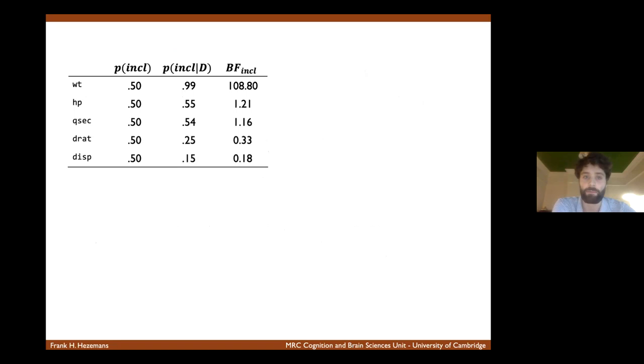So we see here that again the car's weight, the data is 109 times more likely among models that include the car's weight compared to those that exclude it. The other results are a bit equivocal, but it's also nice to see that this predictor, DISP, which is engine displacement, there's quite strong evidence in favor of excluding it because the data was much less likely among models that included this predictor.